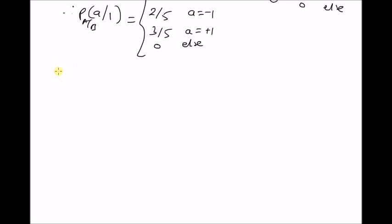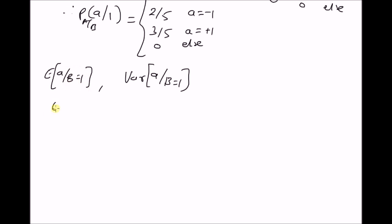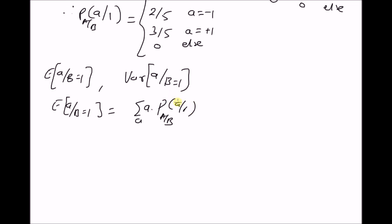Now from this, we want to find the conditional moments of the random variable A. The expectation of A given B equal to 1 is, by definition, the summation over all values of A of a times the conditional probability mass function P(A|B=1). This equals minus 1 multiplied by 2/5 plus 1 multiplied by 3/5, which equals 1/5.